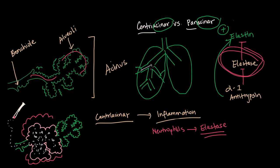If we look at the lungs as a whole, centriacinar is early on, near the larger caliber airways like the bronchioles.